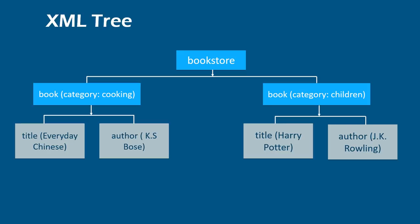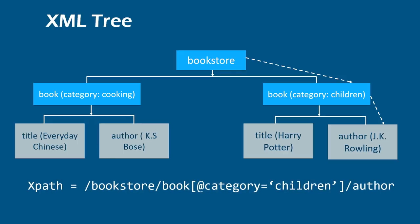Now let's take an example and try to locate the author of a book for the category children. We start with the root node bookstore, then go down to book. We have two books here — we need the one with category children. Once we are on the right node, we go down and pick the node that has the author tag. So the XPath to locate the author for category children would be: root node bookstore, child node book with attribute category whose value is children, and the tag author.